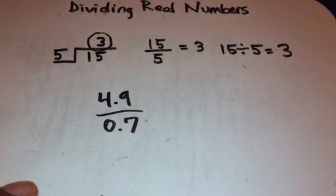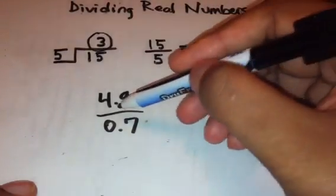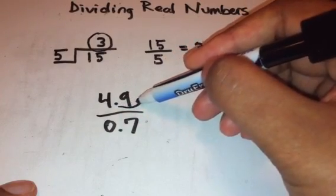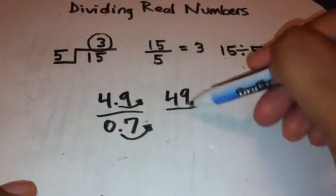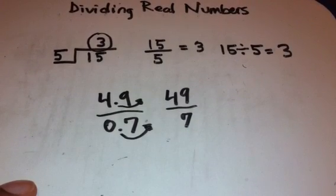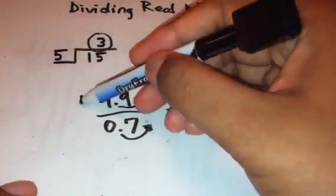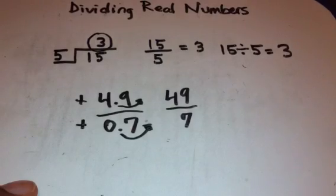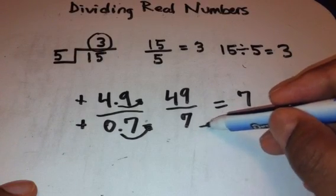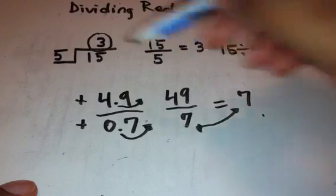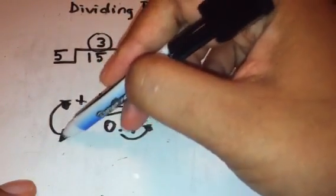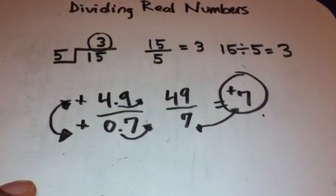Let's do one more. 4.9 divided by 0.7. Or, how many times does 0.7 go into 4.9? When you're dealing with these decimals and you're dividing, the best thing for you to do is to move the decimal point over enough spaces so that you just have a whole number here. So if we move it over, we have 49 divided by 7. So how many times does 49 go into 7? It goes in 7 times. You want to check that? Well, what's 7 times 7? 7 times 7 is 49. So we have the correct number here. And what sign should it have? Well, we're dealing with two positive signs. So our answer is just going to be a positive 7.